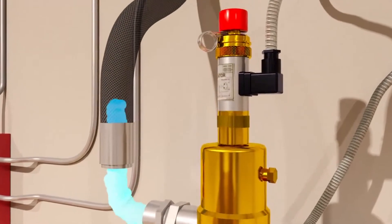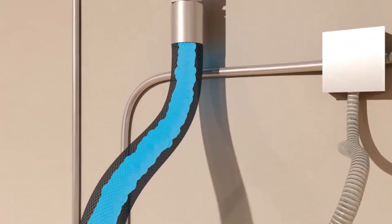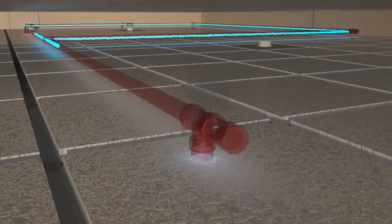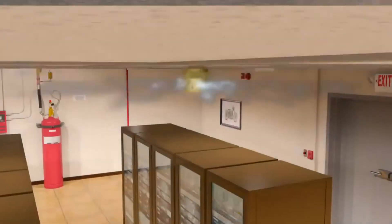In a single tank system, the actuator opens the tank valve, discharging agent through distribution piping and nozzles into the hazard area.